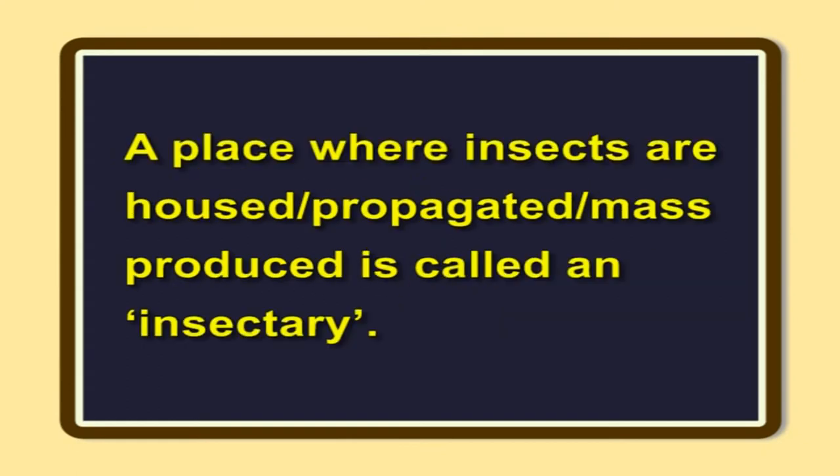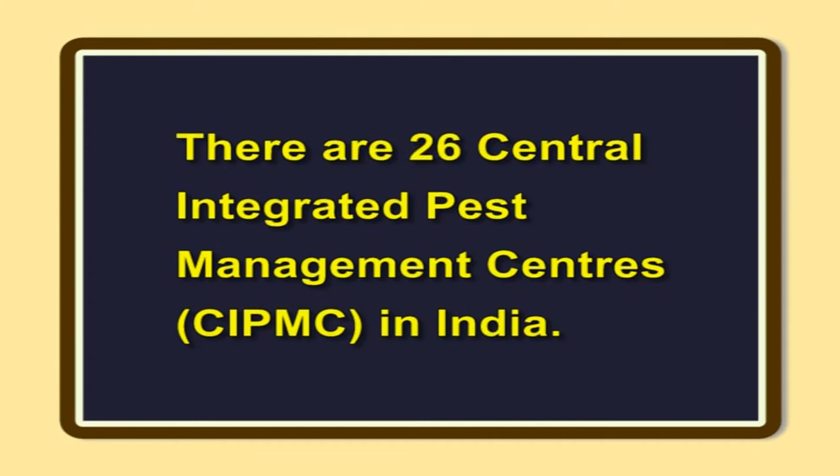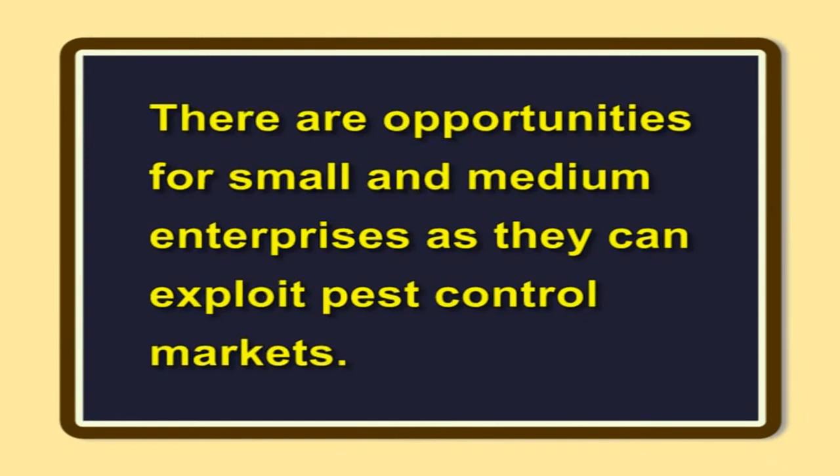Establishment of Insectary. A place where insects are housed, propagated, or mass-produced is called an insectary. India's first commercial insectary, BCRL (Biocontrol Research Laboratory), was established in Bangalore during 1981. Since then, numerous companies have come up countrywide producing predators — mainly coccinellids and chrysopids — and a variety of parasitoids, notably Trichogramma species and its strains. There are 26 Central Integrated Pest Management Centers in India in different states to produce biocontrol agents, including biopesticides, for augmentation. Still, availability of bioagents, especially at the local level, is a major constraint in promoting biocontrol. There are opportunities for small and medium enterprises as they can exploit pest control markets.